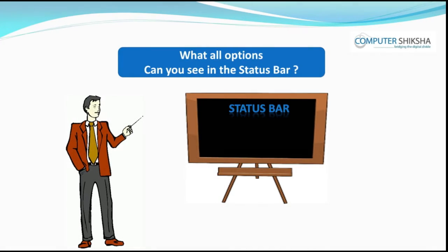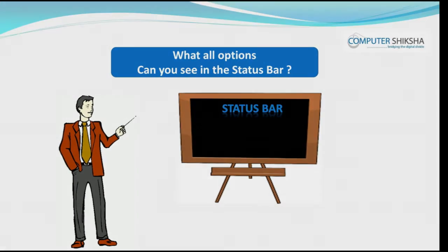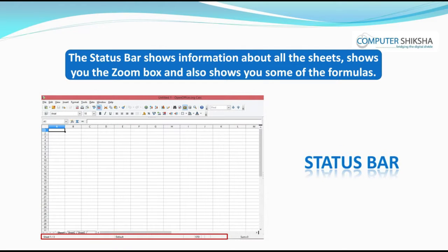What options can you see in the status bar? The status bar shows information about all the sheets, shows you the zoom box, and also shows you some of the formulas.